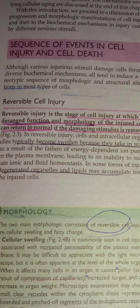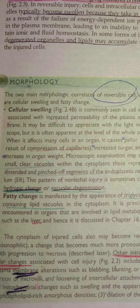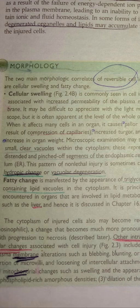Reversible cell injury is the state where there is deranged function and morphology of the injured cell, but when the damaging stimulus is removed, the cell returns to its original state. Several changes occur: the cell becomes swollen, there may be deranged organelles and lipids. When cells swell, more water enters, causing increased organ weight and pallor. Pallor occurs because the swollen cell compresses blood vessels, so blood cannot reach there correctly. There may also be fatty changes — more lipid vacuole formation occurs in the liver, called fatty liver.